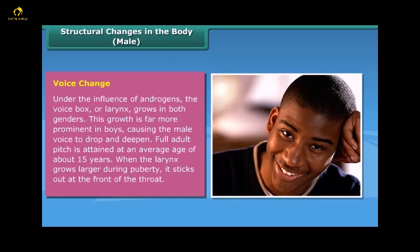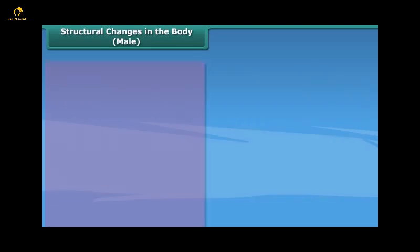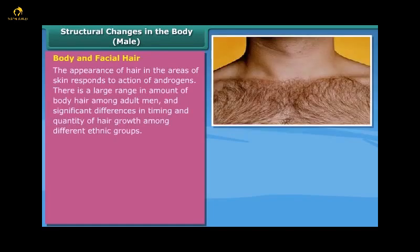Voice change: under the influence of androgens, the voice box or larynx grows in both genders. This growth is far more prominent in boys, causing the male voice to drop and deepen. Full adult pitch is attained at an average age of about 15 years. When the larynx grows larger during puberty it sticks out at the front of the throat. Body and facial hair also appear in areas of skin that respond to androgens.